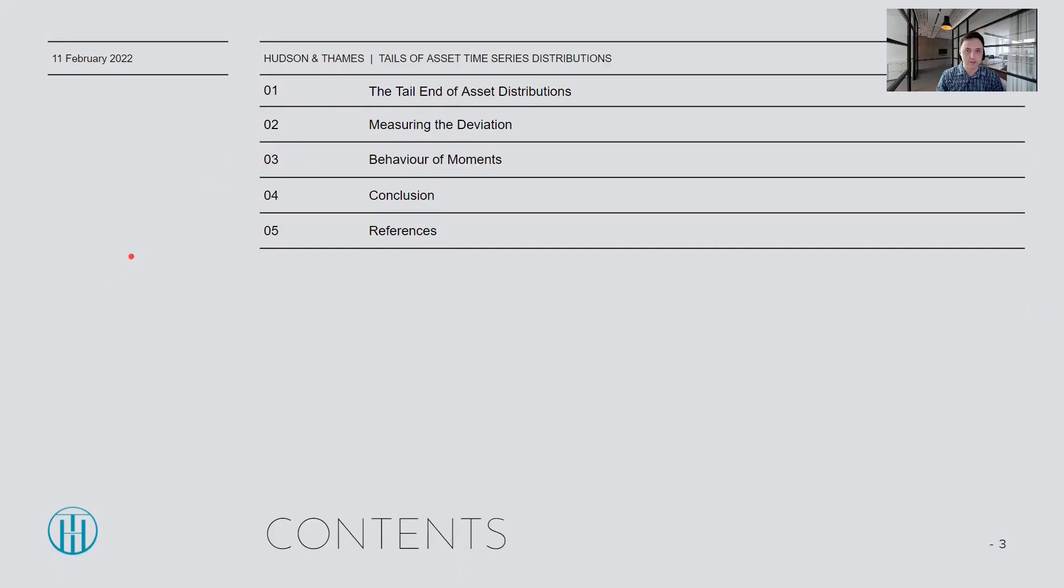The presentation will be divided as follows. In the first part, I will make some brief comments about the tails of distributions. I will then talk about how to measure the deviation of these distributions compared to a normal distribution. Then I will discuss the behavior of moments, especially higher order moments, since these distributions are tail heavy. And I'll end with my conclusion and references.